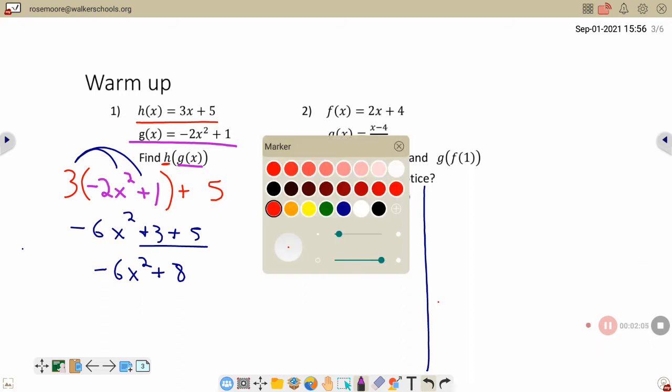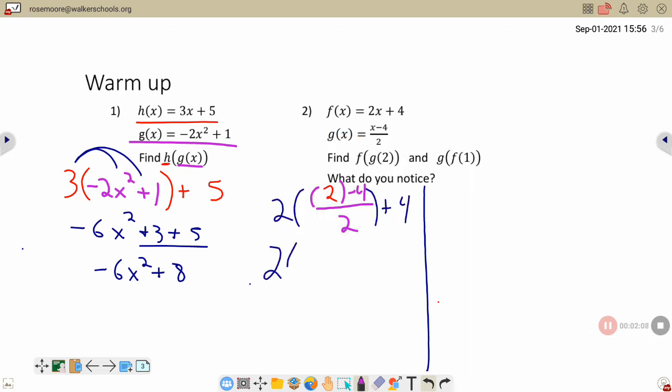Order of operations tells us to do the numerator first. I know it's tempting to deal with the denominator, but numerator first. So we're going to leave our outsides alone to blank plus 4. So when we do that, I'm going to have 2 minus 4, which is negative 2 over 2. What is negative 2 divided by 2? So that would be 2 blank negative 1 plus 4. 2 times negative 1 is negative 2 plus 4, which is 2. So we ended up with what we plugged in. Interesting.